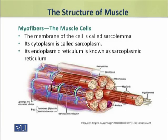Muscle cells have a plasma membrane, but in muscle cells this membrane is called sarcolemma. The cytoplasm of these cells is called sarcoplasm, and the endoplasmic reticulum is also present within them.